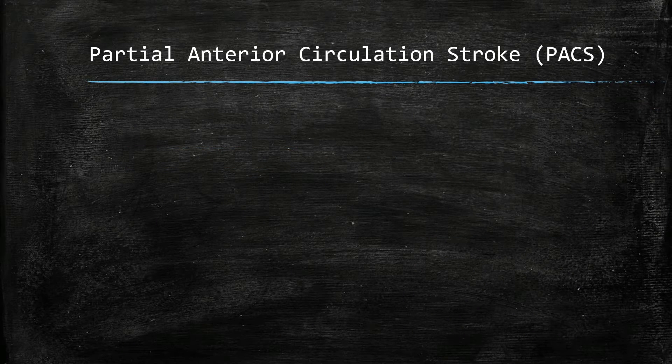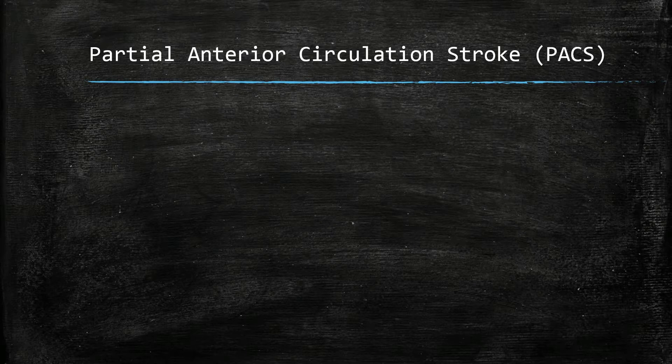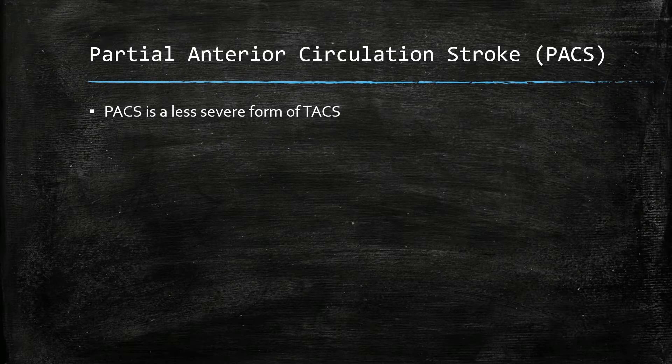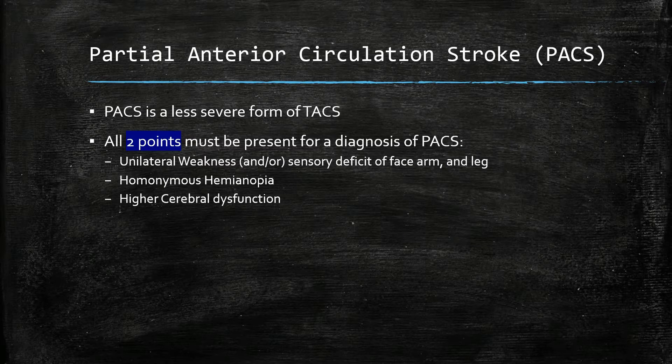A partial anterior circulation stroke is a less severe form of TACS. It has the same criteria points as TACS, but in order to make a diagnosis, two of the three points must be met.